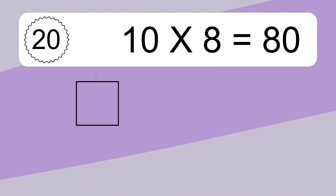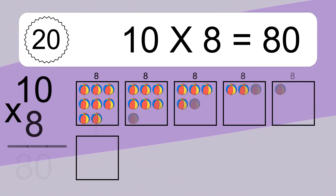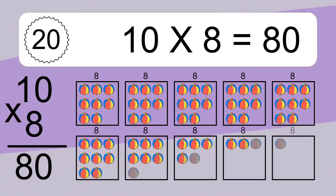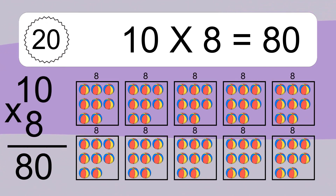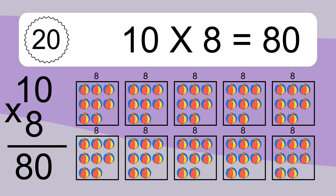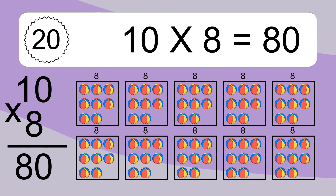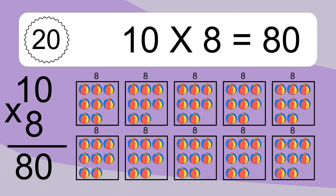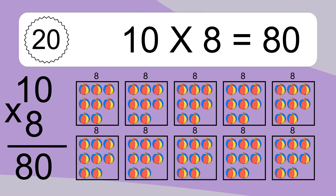10 times 8 equals what? We have 10 boxes and each box has 8 colorful balls inside. If you count all the boxes together, you will have 10 times 8 balls. This equals 80 balls.